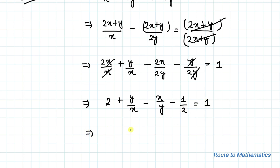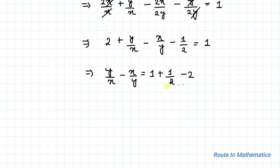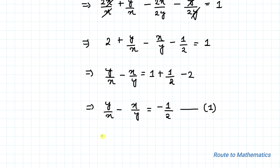This implies y/x minus x/y equals 1 + 1/2 minus 2. Taking LCM, we get y/x minus x/y equals -1/2. Let's take this as equation 1.